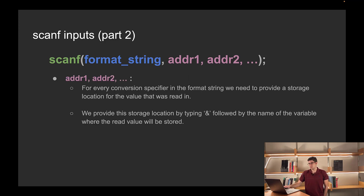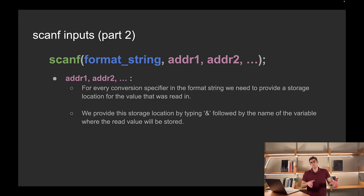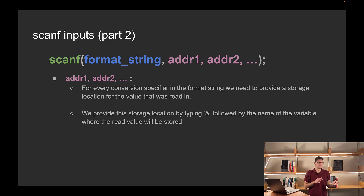Now let's look at these addresses. The addresses are just the locations where we're going to store the values written by the user. We usually want to store values within variables, and the way that we provide an address to a variable is by typing an ampersand followed by the name of the variable. Also, we have to provide an address for every conversion specifier in the format string, and the order of these addresses does matter.